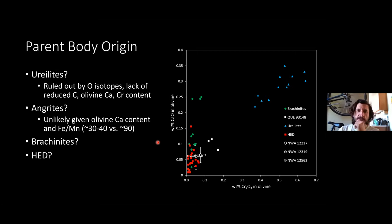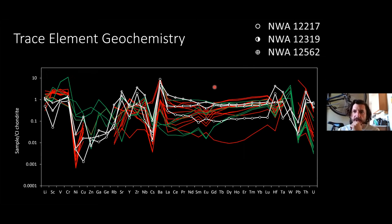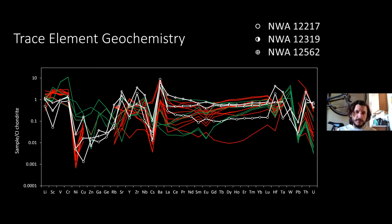That basically leaves, according to oxygen isotope systematics, an association with brachinites or HEDs. Looking at trace element geochemistry recently done by SIOGL — James Day and Maureen Paquette — these form a broadly similar pattern to HED meteorites in red and brachinites in green. This doesn't tell us much other than it's an overall largely chondritic rare-earth element pattern. Two of these meteorites show slight enrichment in light rare earth elements, whereas another shows more of a depleted pattern. Overall they plot in the general vicinity of both brachinites and diogenites.